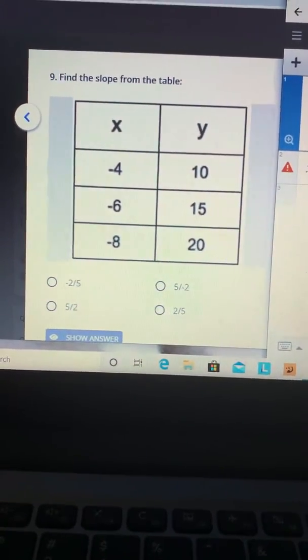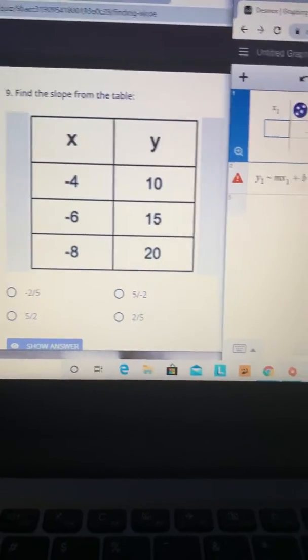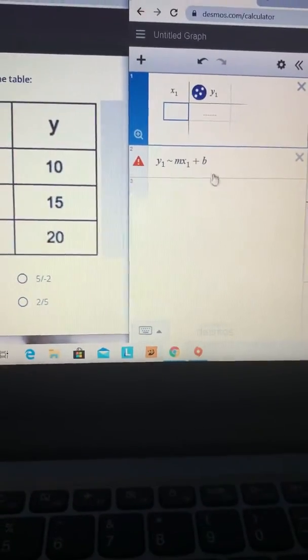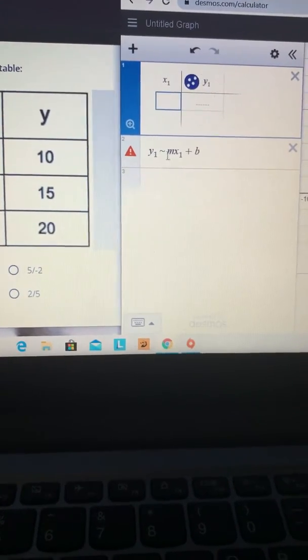We have a question asking for the slope given a table. We know what to do because we have our Desmos calculator open. You don't have to erase anything in the second box, just leave your equation there.